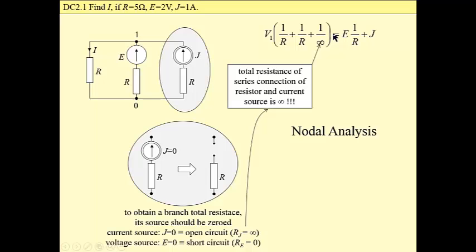So this is how to take into account a branch with the current source at the left side of an equation. At the right side, obviously, it is current J that enters node 1. So this is the nodal equation. For this node, we solve this equation to find node voltage V sub 1, which is 3.5.